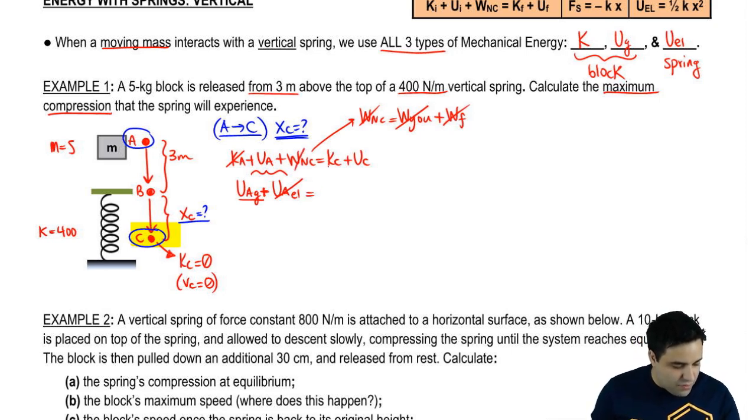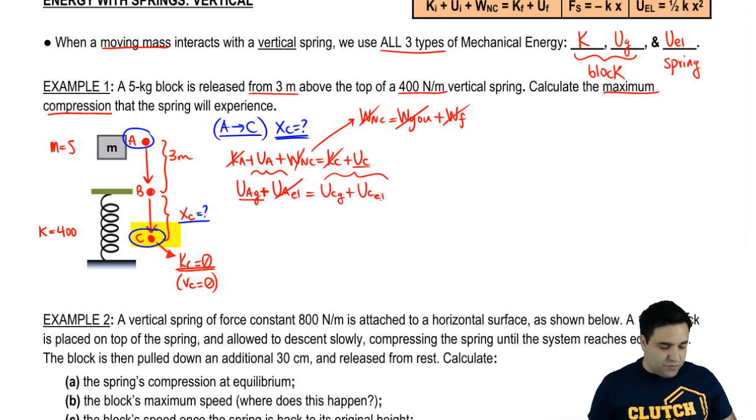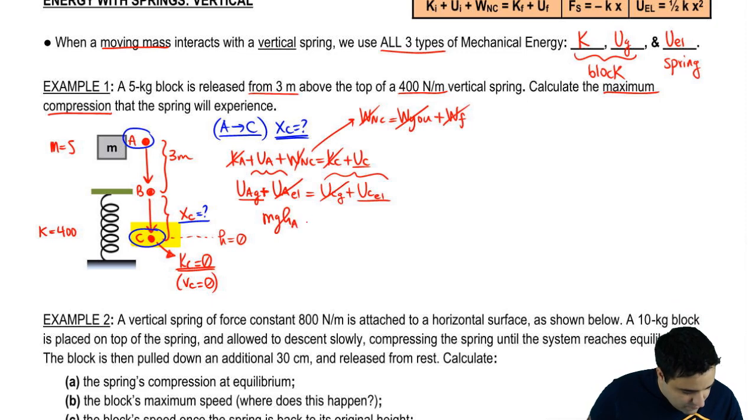And on the right side, you have no kinetic energy, because at the end, it stops. That's why it's maximum, and you do have potential energy. Now, remember, potential energy, there are two types. You have, at point C, gravitational potential energy, and at point C, elastic potential energy. At the bottom, we're going to say that this is the lowest point. The height here is 0. Therefore, there's no gravitational potential energy, but the spring is certainly compressed, so there is some spring energy. So I have here mgh at point A, and then I have here half kx squared at point C. Those are the two types of energies.